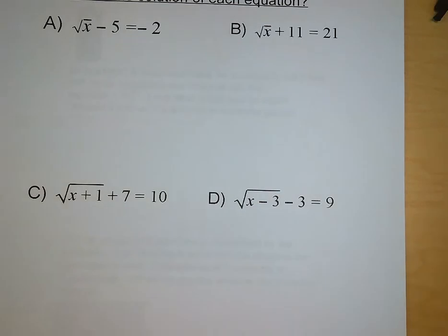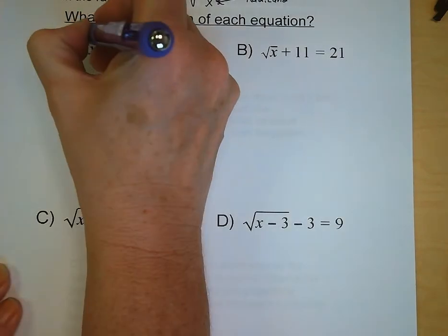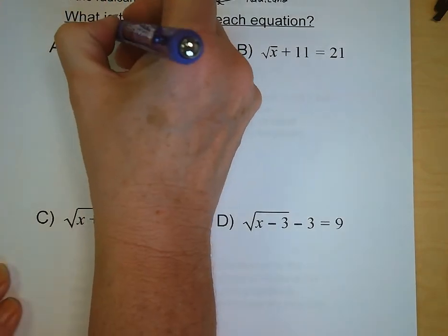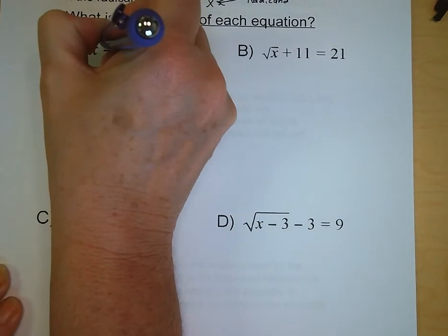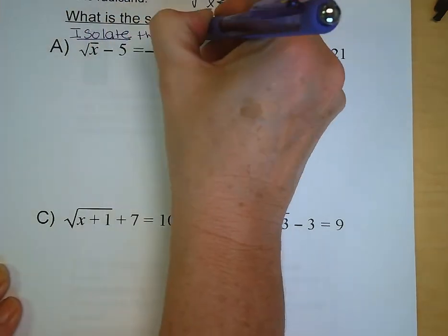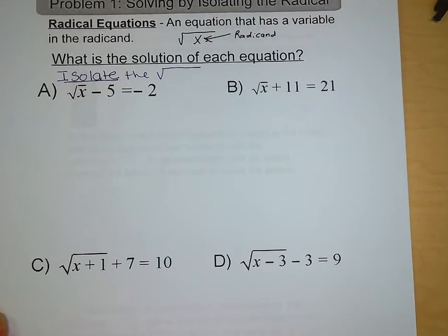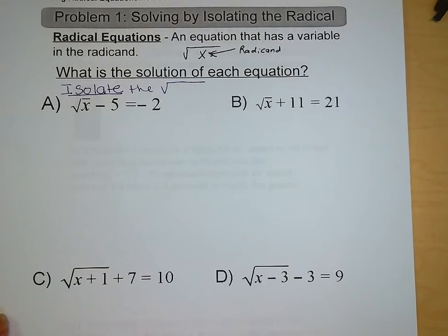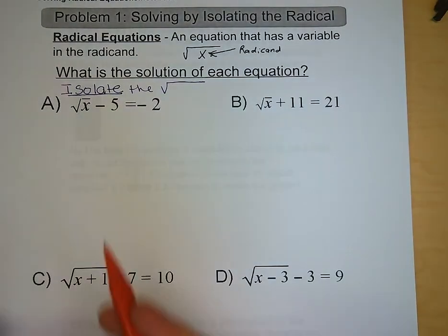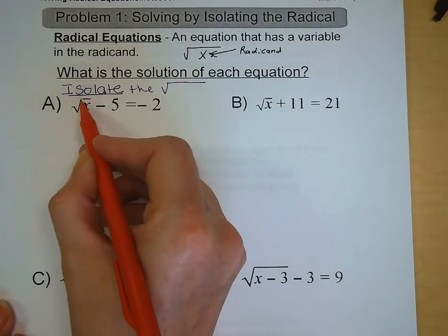So we're going to start off. Problem number one is solving by isolating the radical. And a radical equation is an equation that has a variable in the radicand. So the radicand we remember is the little square root symbol. So if we have a variable underneath that, we call that a radical equation.